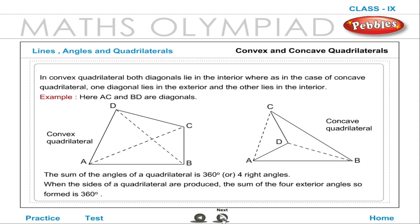For example, here AC and BD are diagonals. The sum of the angles of a quadrilateral is 360 degrees or four right angles. When the sides of a quadrilateral are produced, the sum of the four exterior angles so formed is also 360 degrees.